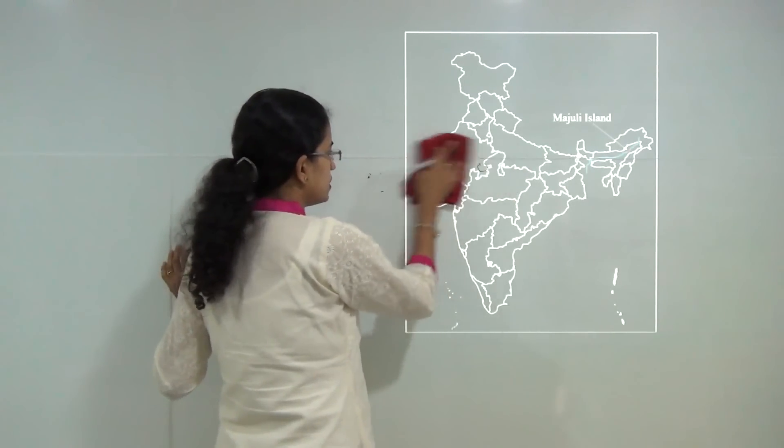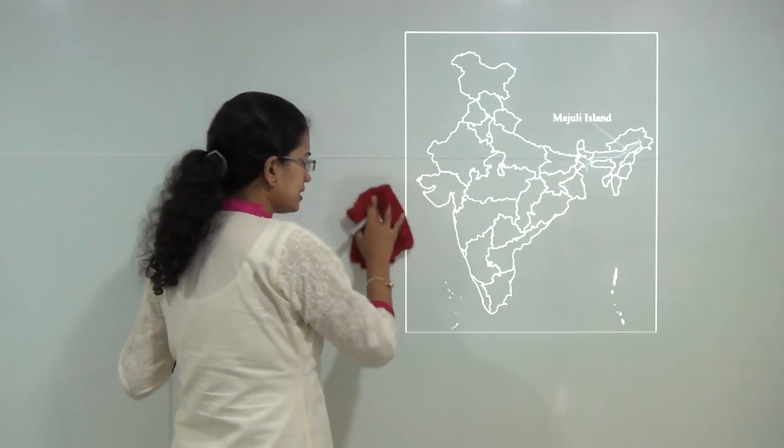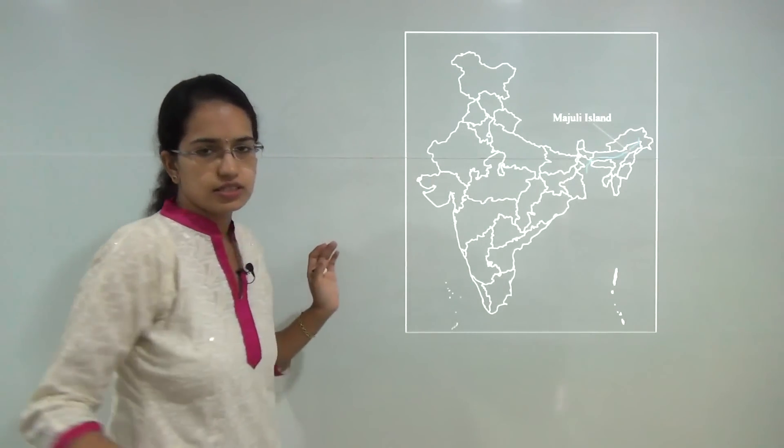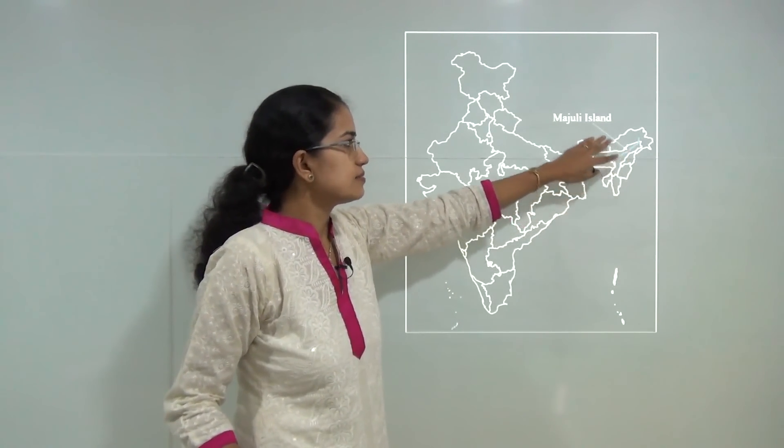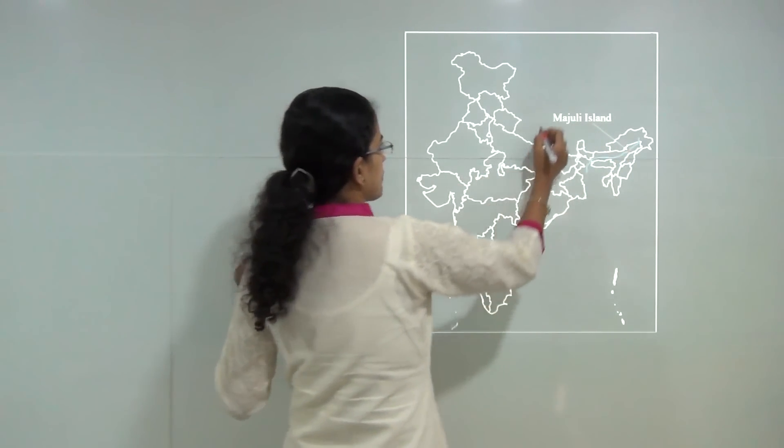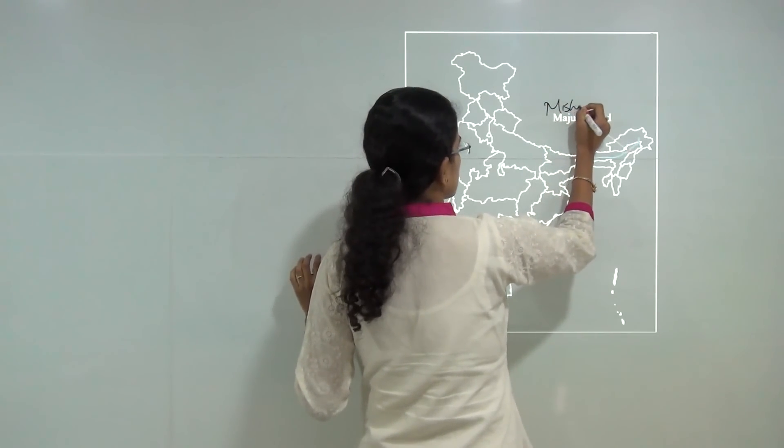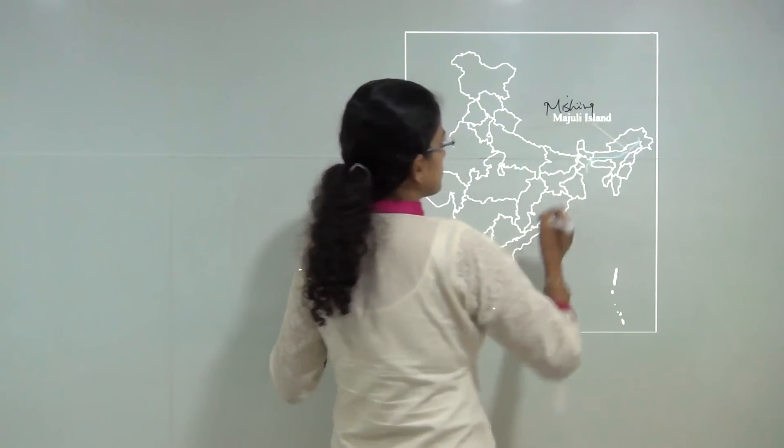Next you have Majuli. Majuli has been discovered as the first island district and this first island district lies in Assam. It is on the river Brahmaputra and this Majuli island is home to one of the famous tribes which are Mishing. It is home to Mishing tribes.